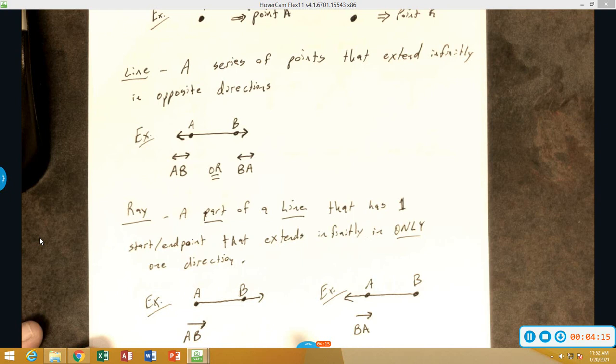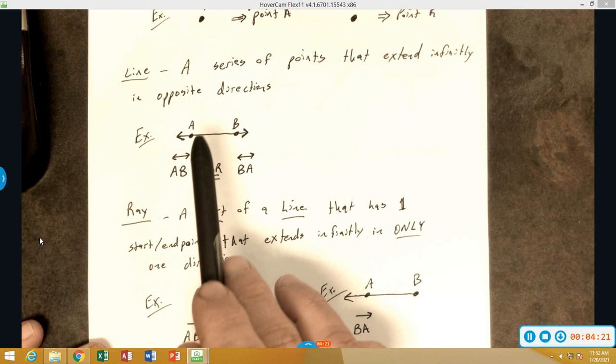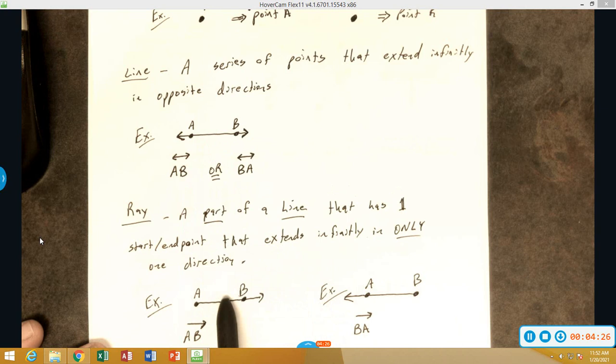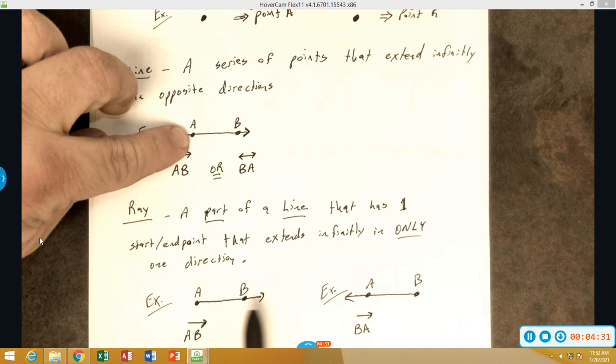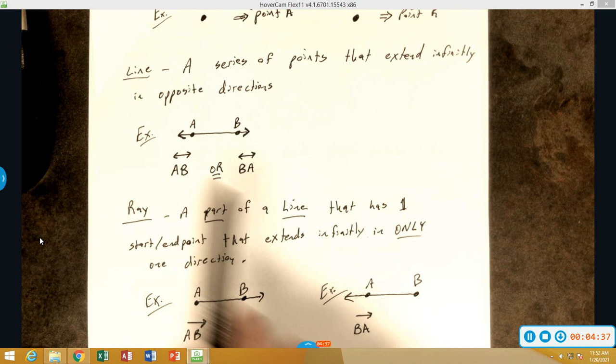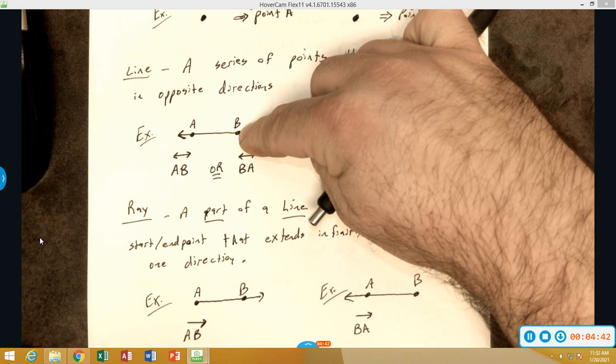Notice that since it's a part of a line, we can put this up on top of this line right here. This is just a photocopy of that without this arrow right here. You can see those are the same. Ray BA is a photocopy of that one as well, but without the arrow coming out of the B.